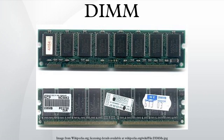DIMMs began to replace SIMMs as the predominant type of memory module as Intel P5-based Pentium processors began to gain market share. While the contacts on SIMMs on both sides are redundant, DIMMs have separate electrical contacts on each side of the module. Another difference is that standard SIMMs have a 32-bit data path, while standard DIMMs have a 64-bit data path.